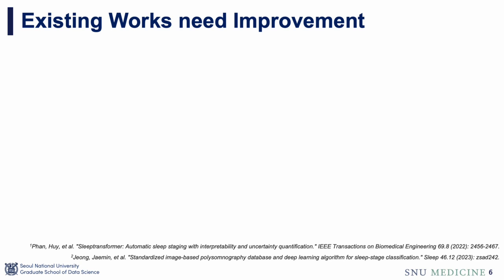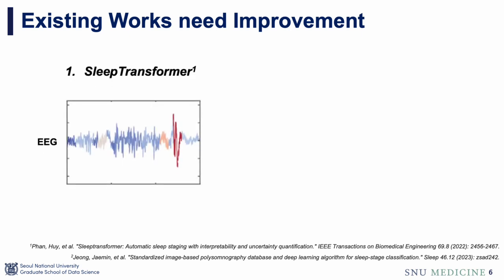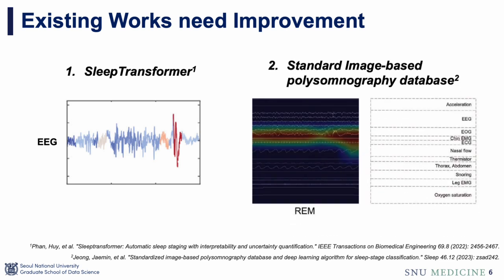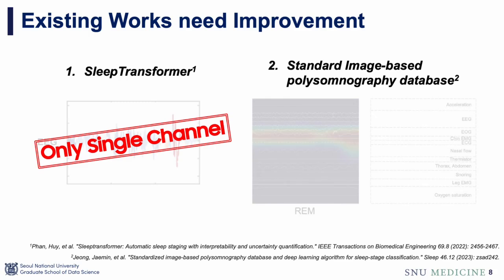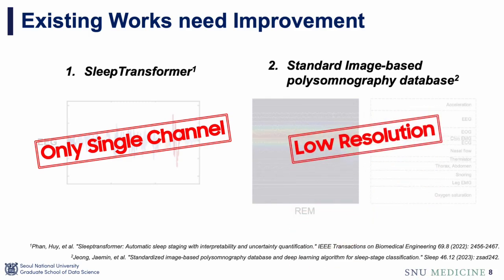Recently, there have been efforts to develop explainable AI models. Sleep Transformer was the first to use the Transformer structure with attention weight visualized on a single-channel EEG. Another approach utilized a standardized image-based PSG dataset, providing a heatmap to highlight the areas where the model focuses. However, Sleep Transformer is limited by using only one EEG channel, and the second approach suffers from low resolution, making it less intuitive.